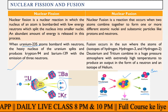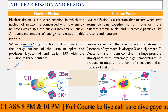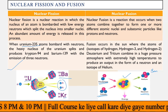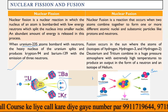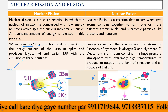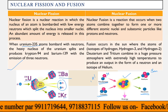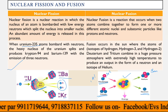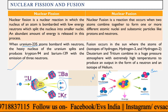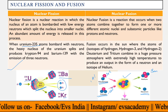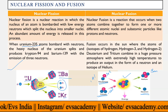Uranium-235 is used in fission, while deuterium and tritium are both isotopes of hydrogen. H-1-1 is regular hydrogen; H-1-2 is deuterium and H-1-3 is tritium. These are what we see in the nuclear fusion reaction.